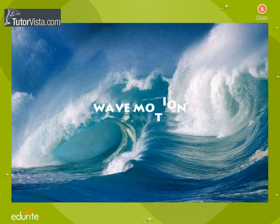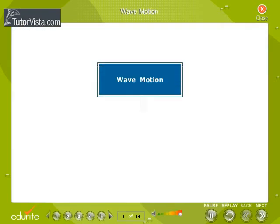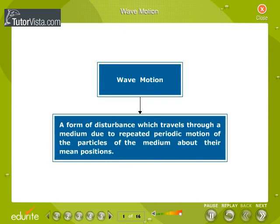Wave motion is a form of disturbance which travels through a medium due to repeated periodic motion of the particles of the medium about their mean positions.